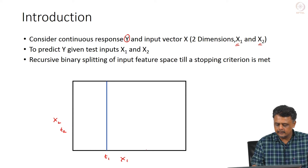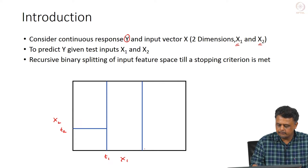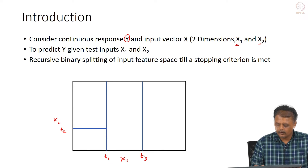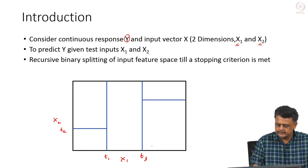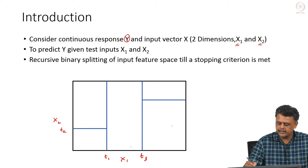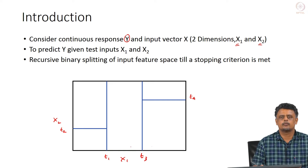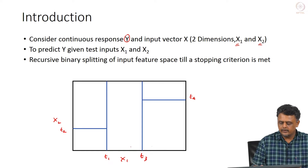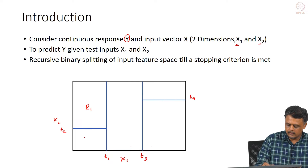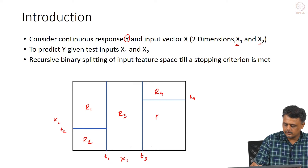Going to the right, we split that region again by considering a threshold T3 along X1. Once we choose T3, that region is split into two. We take the region on the right and split it again by choosing another threshold T4. This gives us regions R1, R2, R4, and R5.